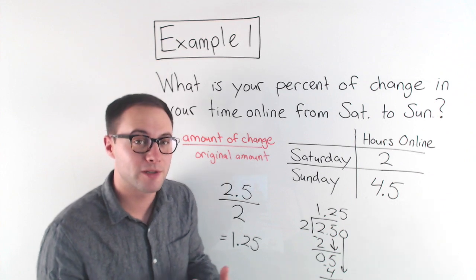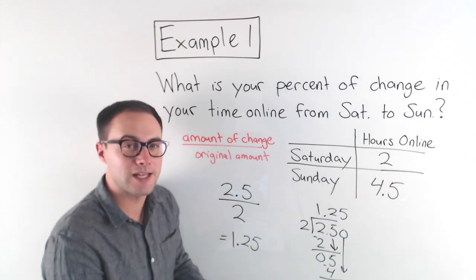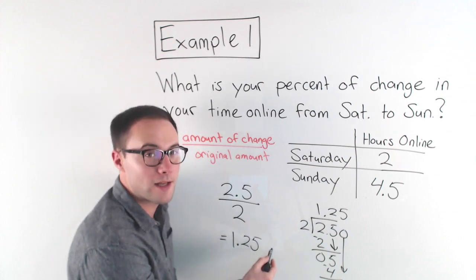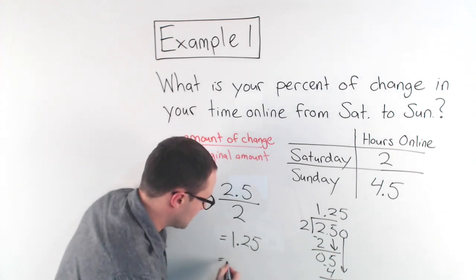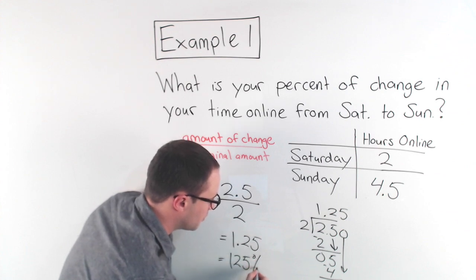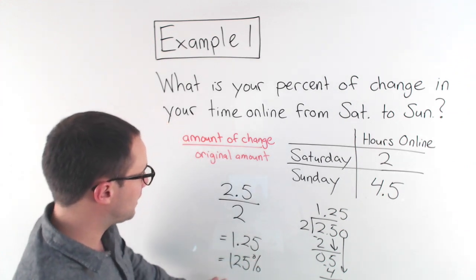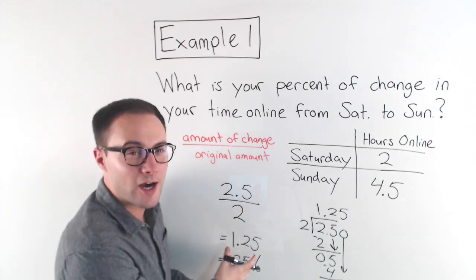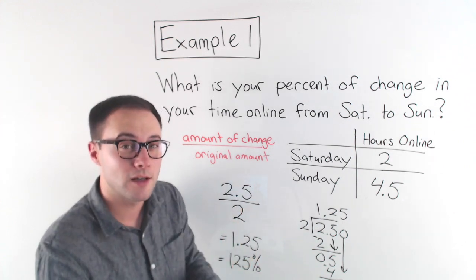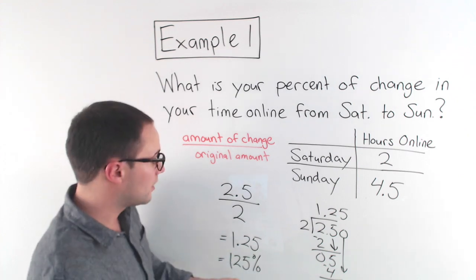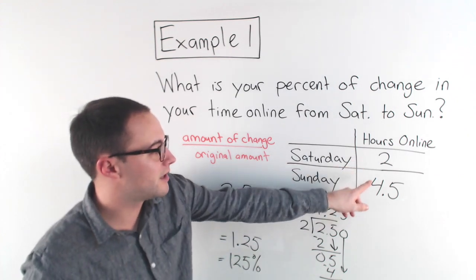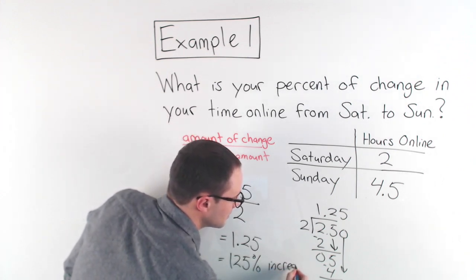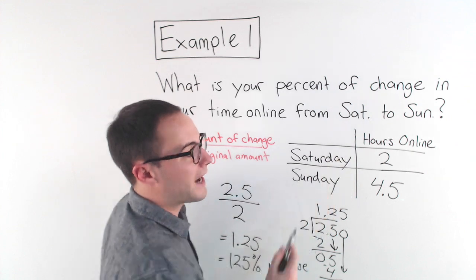1.25 still doesn't look like a percent. To change decimals to percents, we move the decimal point twice to the right, which means that becomes 125%. But I'm not quite done — is this a 125% increase or decrease? We remember that from Saturday to Sunday we increased, so that is a 125% increase in hours online.